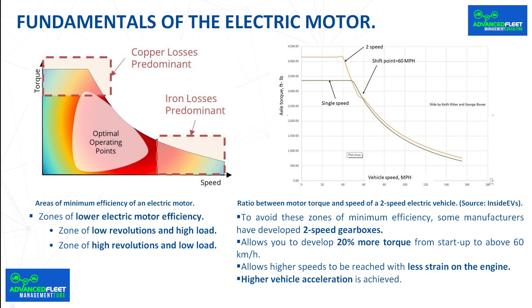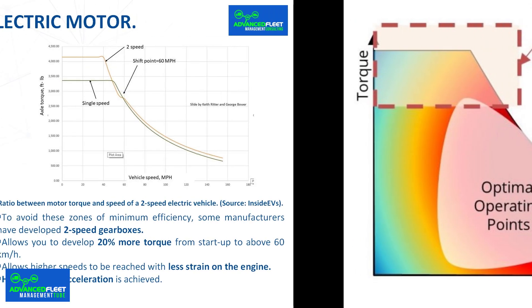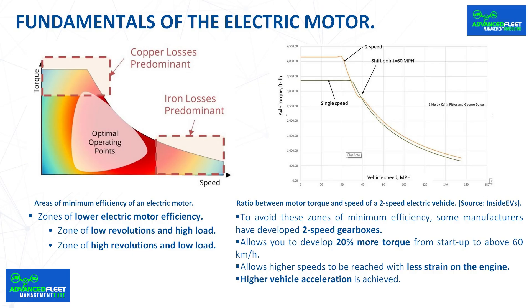Electric motor fundamentals. Zones of lower electric motor efficiency. There are two zones where the electric motor is less efficient: zone of low revolutions and high load, with copper losses caused by the release of heat in the resistance of the windings when the current flows through them. Zone of high revolutions and low load with iron losses. They occur in the magnetic circuit and cause heating and vibration in it. They are due to the circulation of a magnetic flux and can be broken down into two phenomena of different causes and origins: eddy currents and the hysteresis cycle. To avoid these zones of minimum efficiency, some manufacturers have developed two-speed gearboxes.